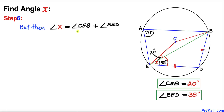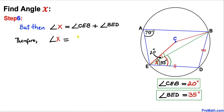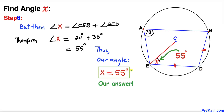For the final step, angle x is equal to the sum of the two individual angles: angle CEB and angle BED. We know angle CEB is 20 degrees and angle BED is 35 degrees. Therefore angle x equals 20 plus 35, which is 55 degrees.